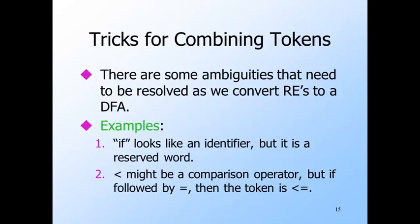For another, when we see less than, we don't immediately know if it's a token by itself or part of a larger token, which would be less than or equal in this case. We need to make sure we don't prematurely declare victory and return the less than when less than or equal is intended by the programmer.